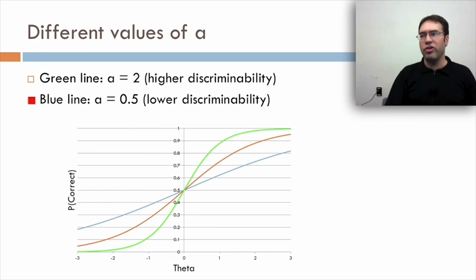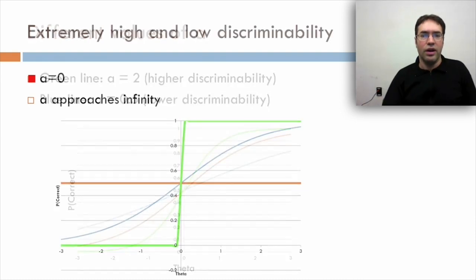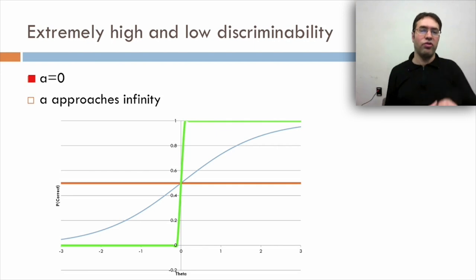Generally you want items with relatively high discriminability, although in some cases being too high for discriminability isn't very useful because it only distinguishes a very small set of the range. So if we look at extremely high and extremely low discriminability, the line where a equals 0 has no discriminability. People do equally well no matter what. I guess that would be a coin flip.